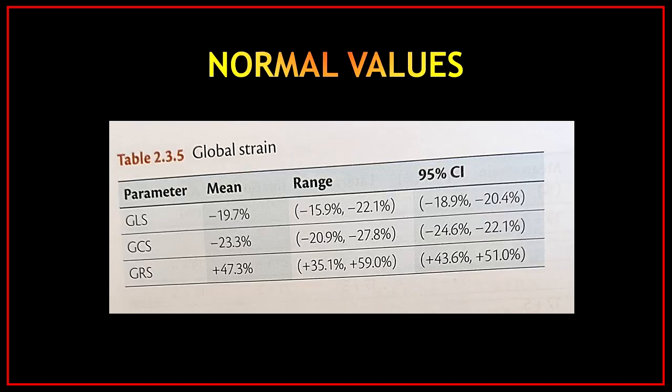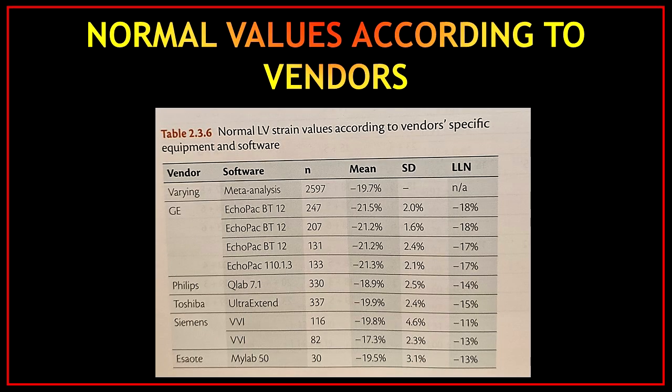Before we start to practice, I want to show you some normal strain values: for global longitudinal strain, for global circumferential strain, and for global regional strain. Here you can see the normal left ventricular strain values according to vendor-specific equipment and software. It's very important to know which machine you are using before reporting a value as normal.